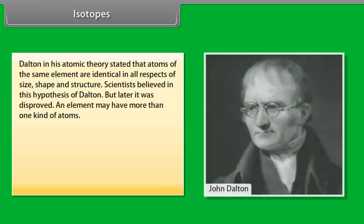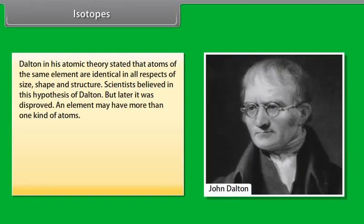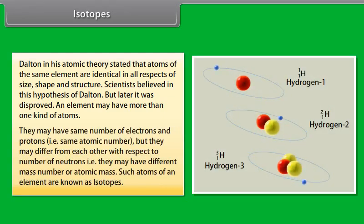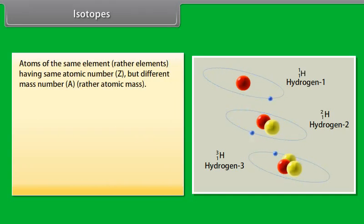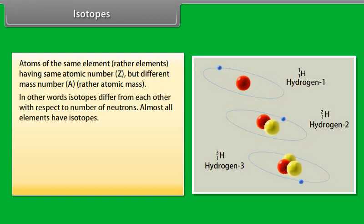Isotopes. Dalton in his atomic theory stated that atoms of the same element are identical in all respects of size, shape and structure. Scientists believed in this hypothesis of Dalton but later it was disproved. An element may have more than one kind of atoms. They may have same number of electrons and protons that is same atomic number but they may differ from each other with respect to number of neutrons. That is, they may have different mass number or atomic mass. In other words, isotopes differ from each other with respect to number of neutrons. Almost all elements have isotopes.